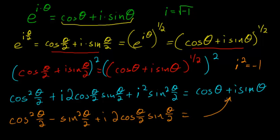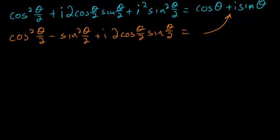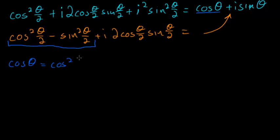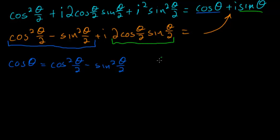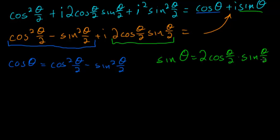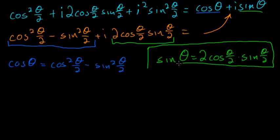Now I want to set the real parts equal to each other: the cosine of theta equals the cosine squared of theta over 2 minus the sine squared of theta over 2. And setting the imaginary parts equal to each other, the sine of theta is equal to twice the cosine of theta over 2 times the sine of theta over 2. Notice that this is one of our two identities that we are looking to derive.